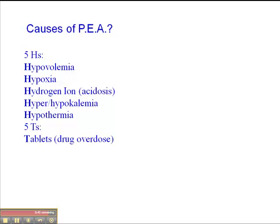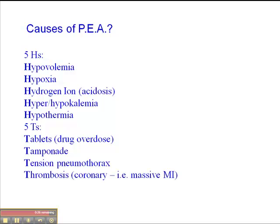The five T's include drug overdoses — so tablets — cardiac tamponade, tension pneumothorax, and thrombosis — so this would be a patient with a massive MI, which we'd have no way of determining until post-mortem examination — and thrombosis or pulmonary embolus. We look for evidence suggesting that, like a DVT. We have to look for these causes and try to determine what they are and reverse them. Tension pneumothorax might be the most readily reversible one of the bunch.